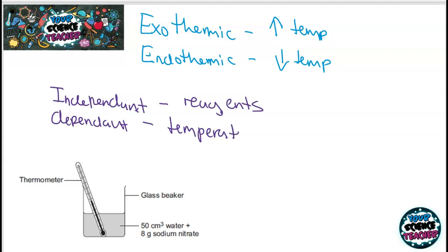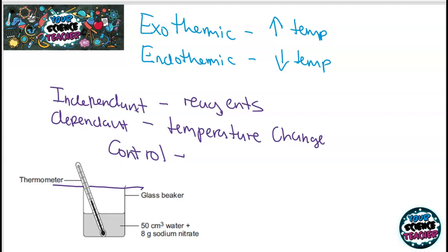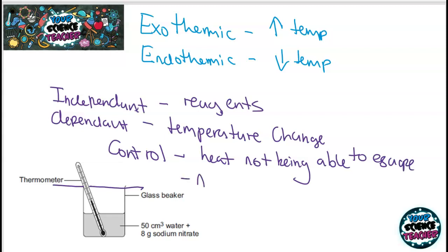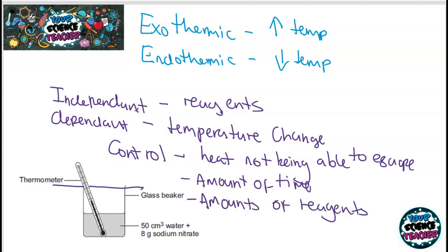Control variables in this practical are likely to be asked about. You need to make sure heat cannot escape or enter your reaction — so you'd want a beaker with a lid so heat cannot escape. You also need to control the amount of time you're measuring over, since leaving the solution longer will probably give a larger temperature change. You also need to control the amount of reagent to ensure a fair test.